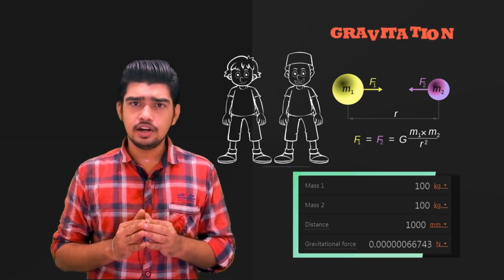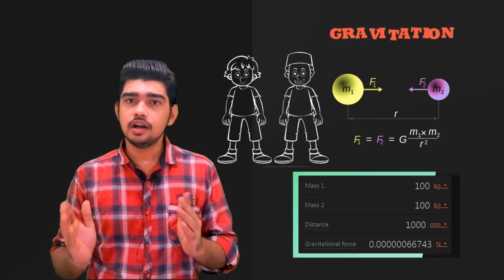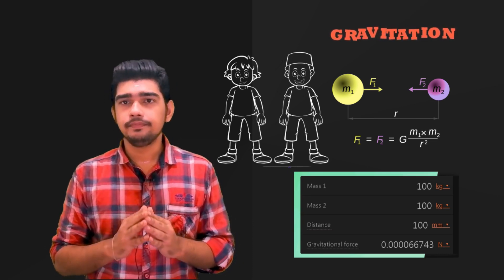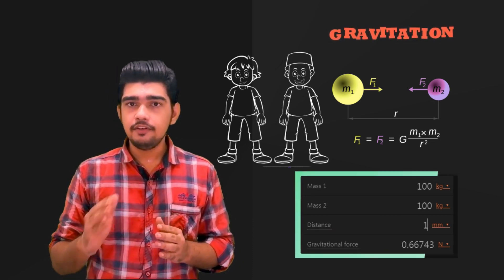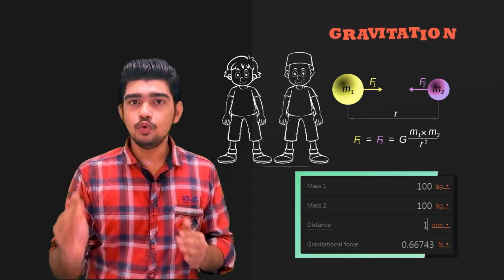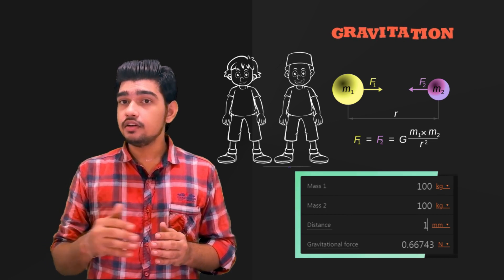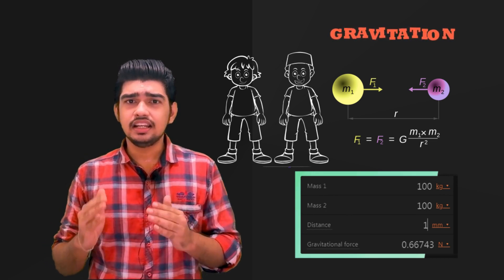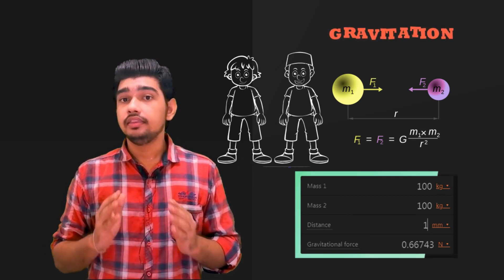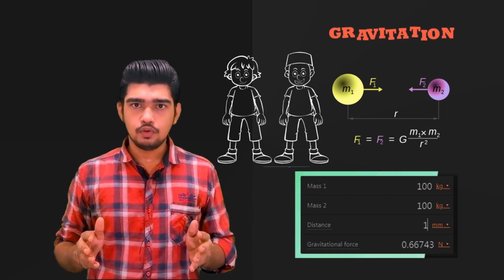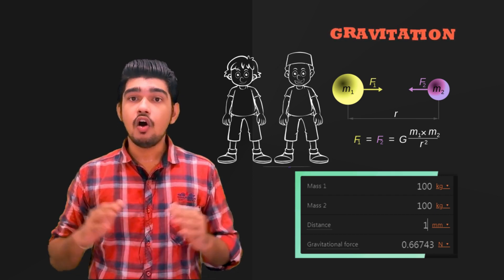Now let us reduce the distance between you and your friend. You can find that even after reducing the distance between you and your friend to 1 mm, gravitational force still has not reached 1 Newton. That's why this gravitational force is the weakest among all other forces.